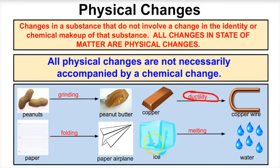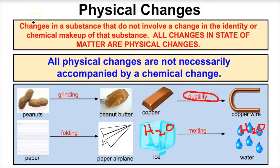We have ice, which is H₂O — water in the solid state — and if we melt it down into liquid water, it's still H₂O. We did not change the chemical makeup; we just changed the physical appearance. So this too would be a physical change. Once again, changes in a substance that do not involve a change in the identity or chemical makeup of that substance are physical changes.